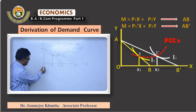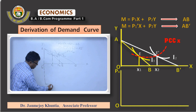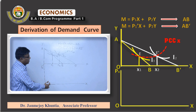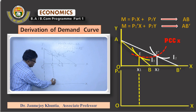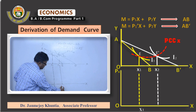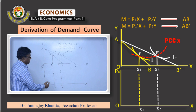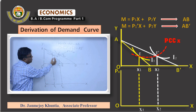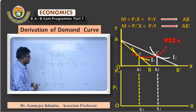Now draw the demand curve for good X on the lower panel. Take price of X on the vertical axis and quantity of X on the horizontal axis. The lower panel is drawn symmetrically and in the same alignment as the upper panel. Quantity X1 can be directly extended downward with the same measurement, so X1 is marked here and X2 is marked here.